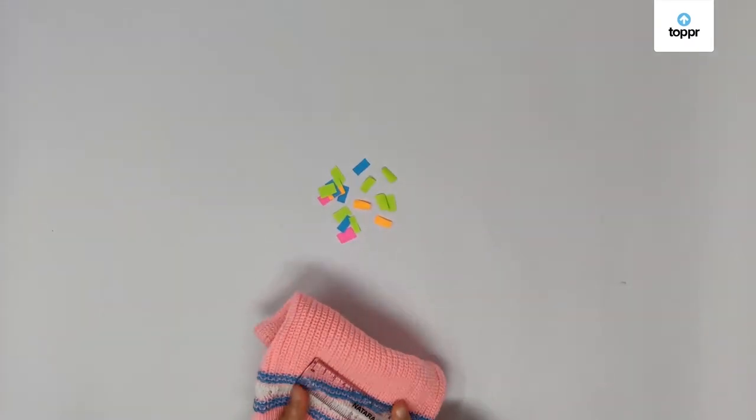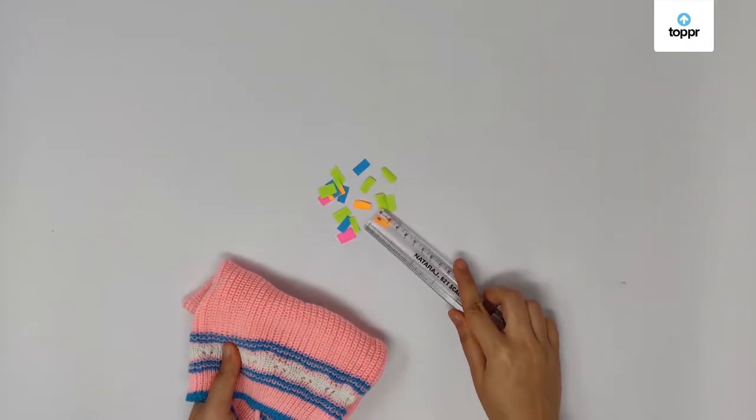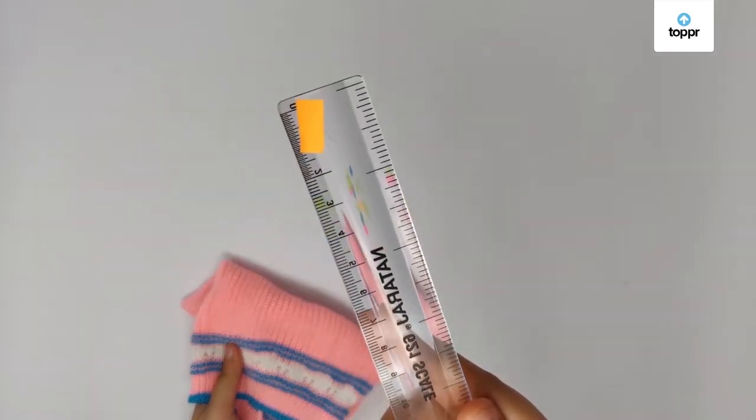Electrically charged? Now what's that? Try rubbing a scale over a woolen cloth and then bring it close to some bits of paper. It attracts them.